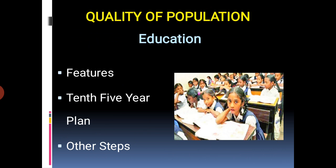Next topic: quality of population. The quality of a population is the overall qualitative functioning of the population, signifying its social, economic and cultural growth and output. Education and health are the most important factors affecting quality of population.